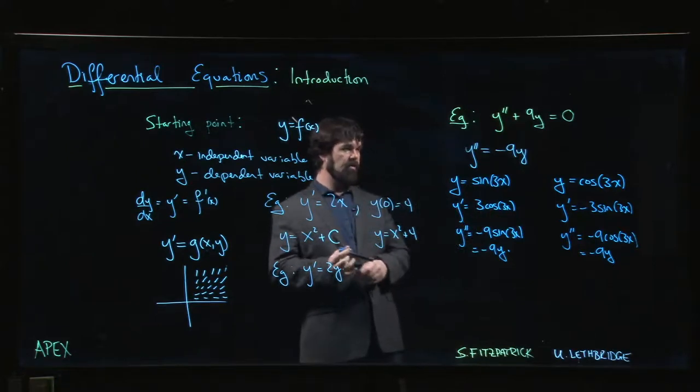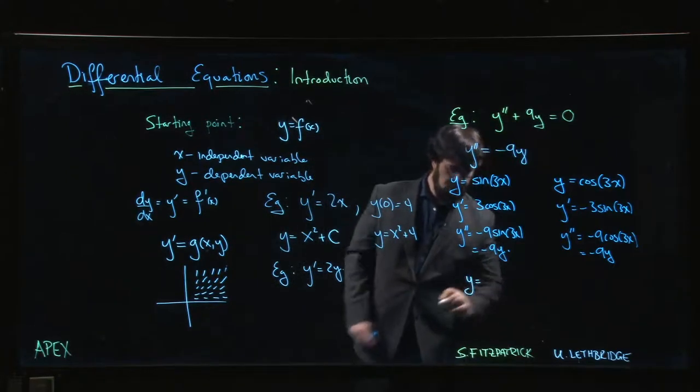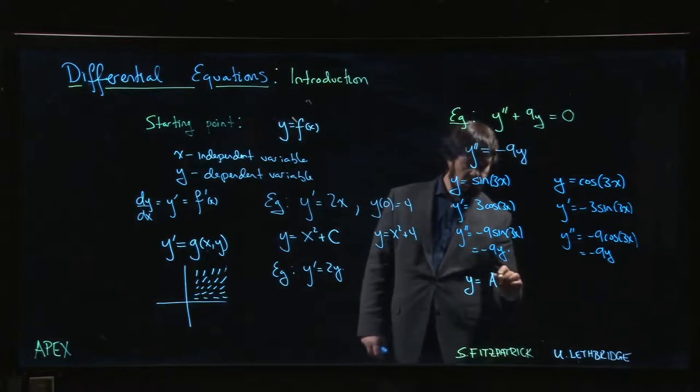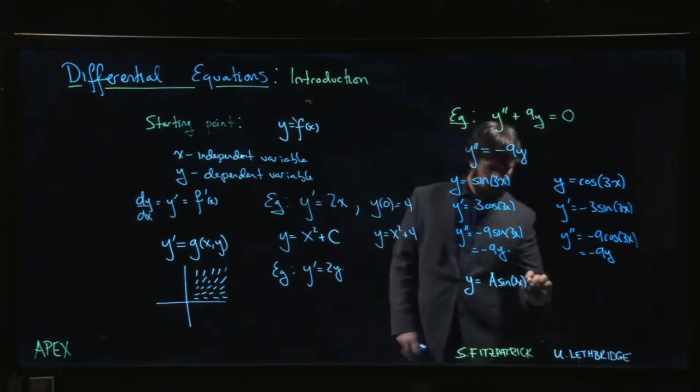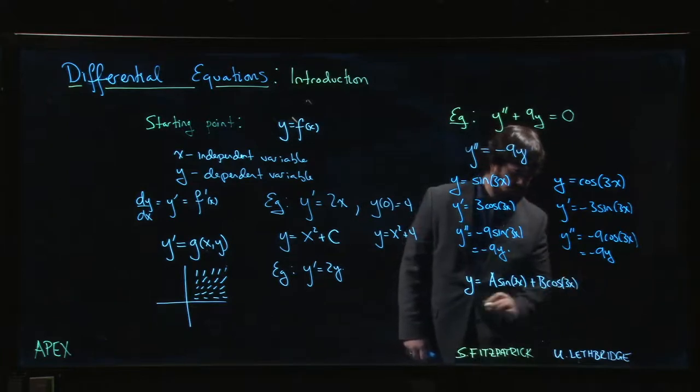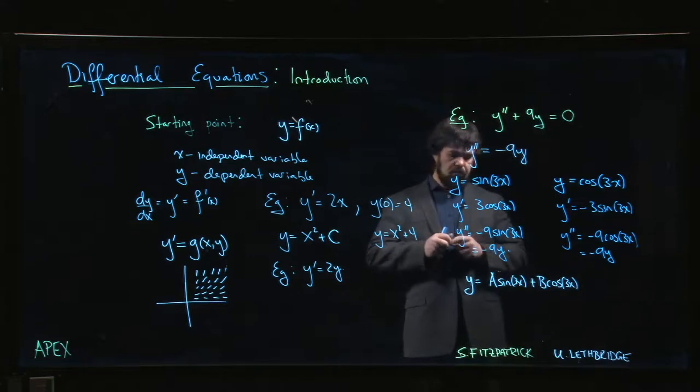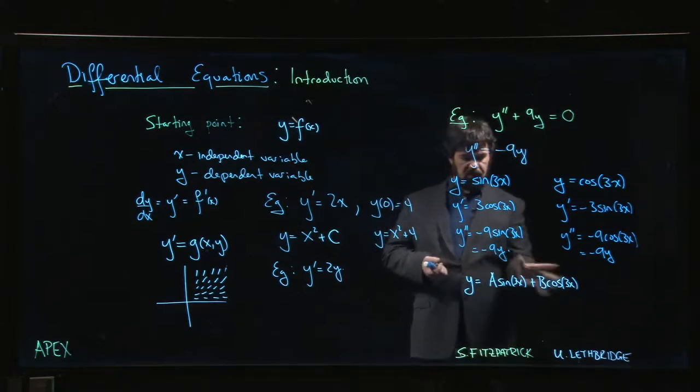And actually it turns out any sort of linear combination of these will work. So a general solution that does the job is going to be to take y to be some constant, maybe call it a, times sine three x and some other constant b times cos three x. You get a sinusoid.